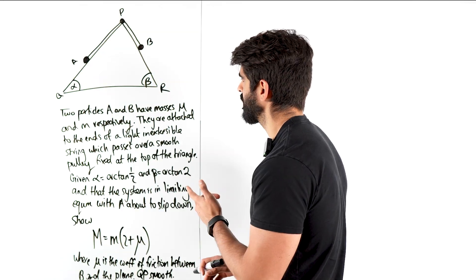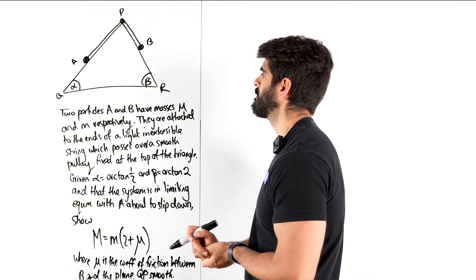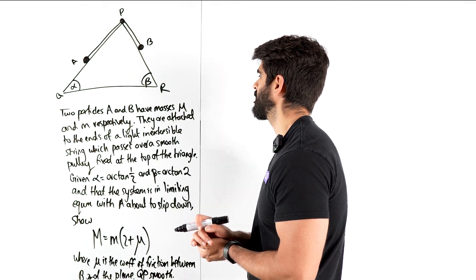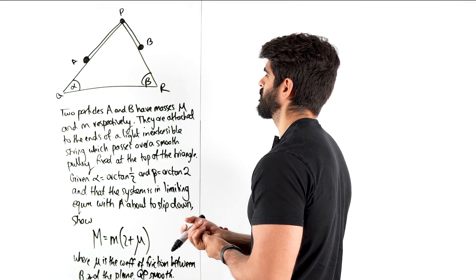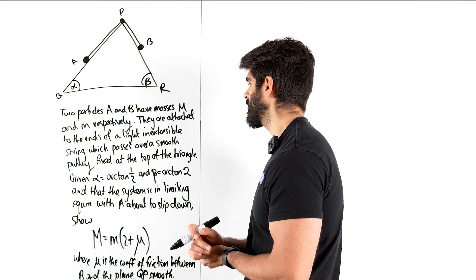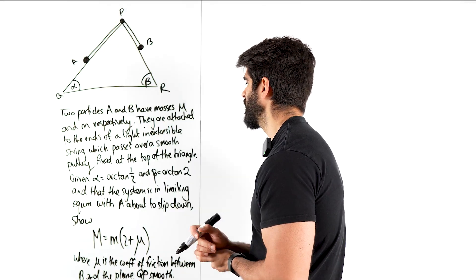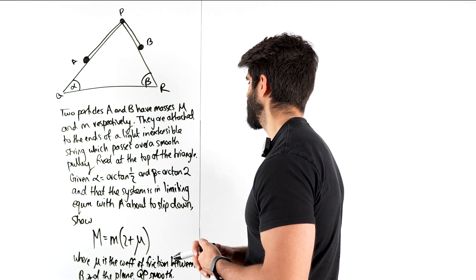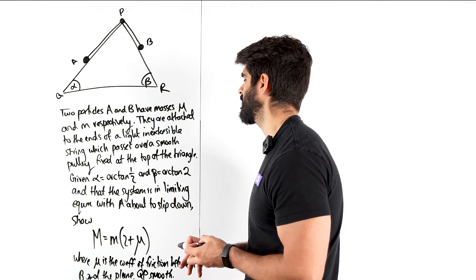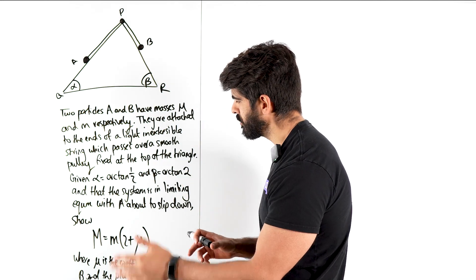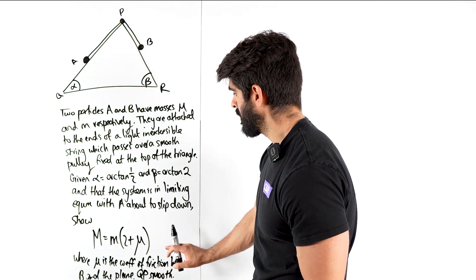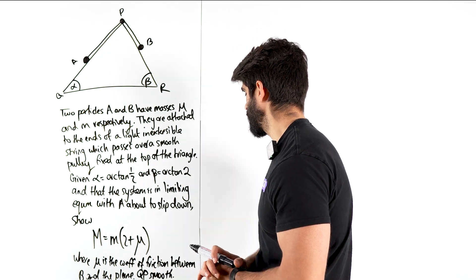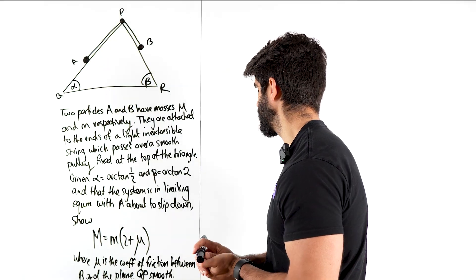It says two particles A and B have masses capital M and lowercase m respectively. They are attached to the ends of a light inextensible string which passes over a smooth pulley fixed at the top of the triangle. Given that alpha is arctan half and beta is arctan 2 and the system is in limiting equilibrium with A about to slip downwards, show that this is true, where mu is the coefficient of friction between B and the plane and QP is smooth.